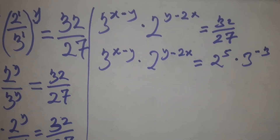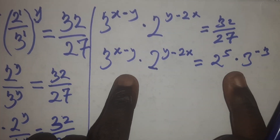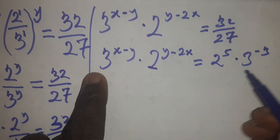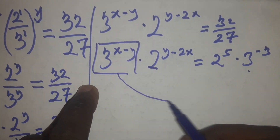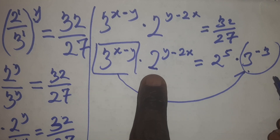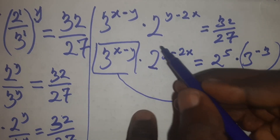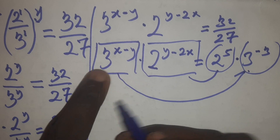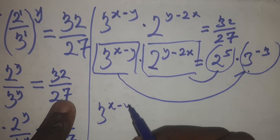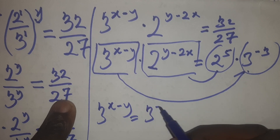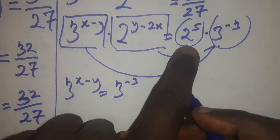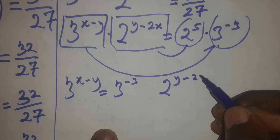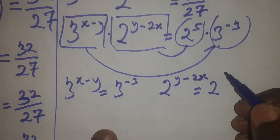This is the key step: we compare the left-hand side and right-hand side. We have 3 raised to power (x minus y) on the left and 3 raised to power minus 3 on the right, so we equate those. We also have 2 raised to power (y minus 2x) and 2 raised to power 5, so we equate those to form two separate equations.